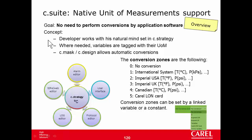The developer works with their natural mindset in C-Strategy, which is considered the core of an application. So the developer can express, for example, the water inlet temperature in Celsius degrees and the discharge pressure in PSI. When needed, variables are tagged with their unit of measure — not all variables have one, since unit status variables or number of compressors are just values without a specific unit of measure.